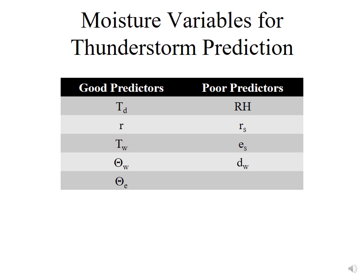What we're looking at here are moisture variables that we can use to diagnose the moisture component. Good predictors of moisture in the lower part of the atmosphere are dew point temperature, the mixing ratio, the wet bulb temperature, the wet bulb potential temperature, and the equivalent potential temperature. All of those are good predictors because they all depend directly upon the amount of water vapor in the atmosphere.